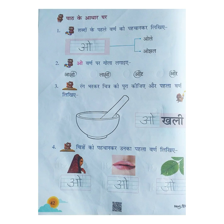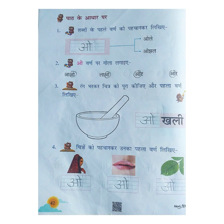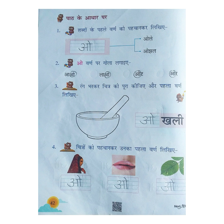Children, take your next page, page number 42. Paad ke aadaar par. Shabda unke pahle varna ko pahachan ka likiye — that is, write the first letter. Olay. Otchal. What is the first letter? O. Second one: O varna par gola lagayye — you have to circle the O letter. Third one: Dengu barka chitra ko porya kijiye, or pahle varna likiye — color the picture and write the first letter. Dash-kli, what is the first letter? O-kli. Fourth one: Chitra unko pahachan karun ka pahle varna likiye. What is the first picture? Otni. First letter? O. Next picture? Ot. First letter? O. And next: Os. Os ki pahle varna kya hai? O. You have to write the O letter. Okhli children, O.